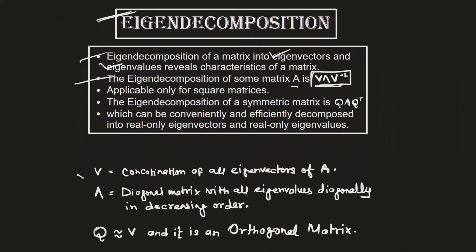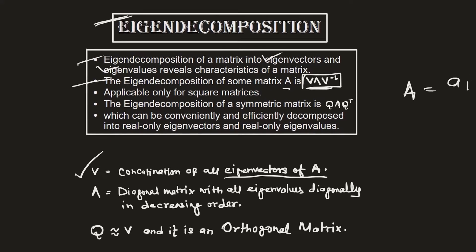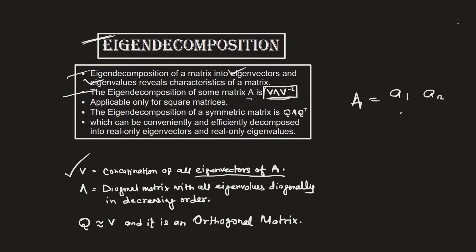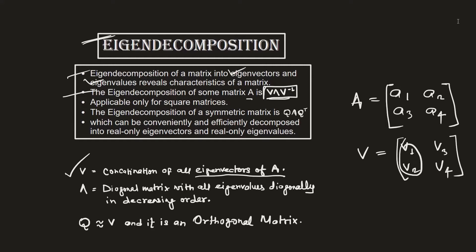The first symbol V is the concatenation of all the eigenvectors for the given matrix. For example, if you have a matrix A with four elements A1, A2, A3, and A4, and the eigenvectors come out to be V1, V2, V3, and V4, then the concatenation of these eigenvectors is what is denoted by V.